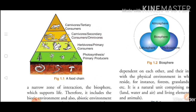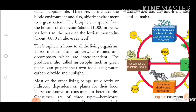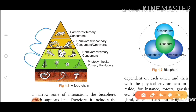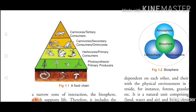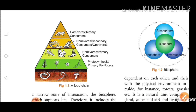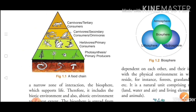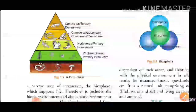Producers, consumers, and decomposers are all interdependent on each other. When they are interdependent in this way, it is called a food chain. Now, suppose one block is affected — if this block is affected, then this block is affected, and this block is also affected.